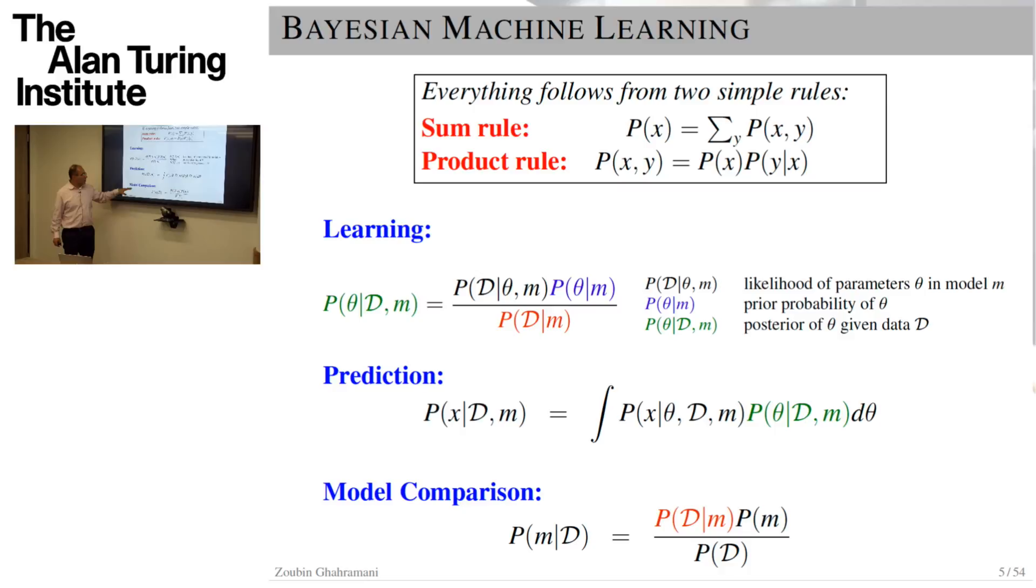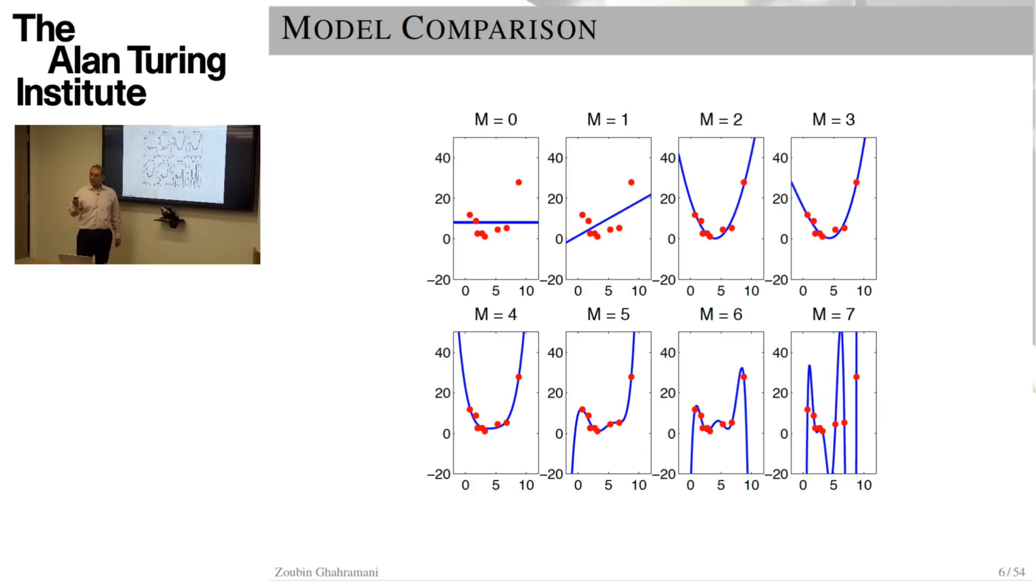So Bayesian prediction is a natural kind of averaging or ensembling process. And model comparison is done in the same way, but at the level of models rather than the level of parameters.